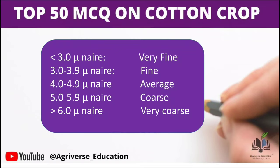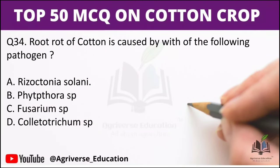In detail: below 3 micronaire — very fine; between 3.0 to 3.9 — fine fiber; 4.0 to 4.9 — average fiber; 5.0 to 5.9 — coarse; and greater than 6 micronaire — very coarse.